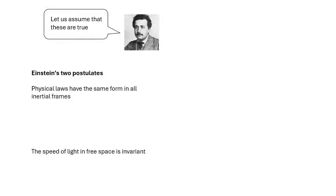Einstein's starting points for special relativity were two postulates — things we assume to be true, from which everything else follows. The first postulate: physical laws have the same form in all inertial frames.